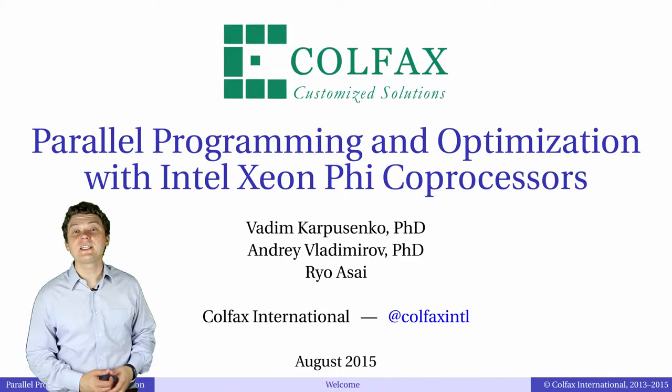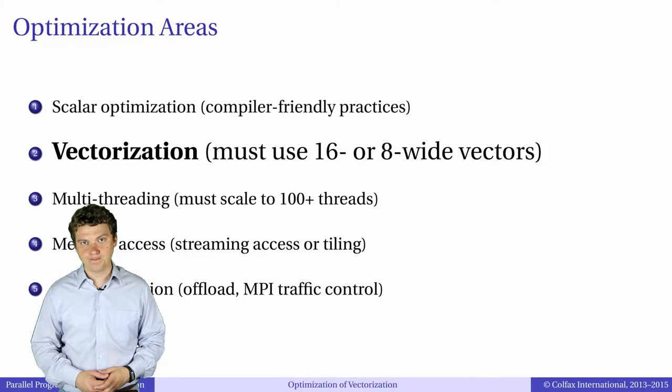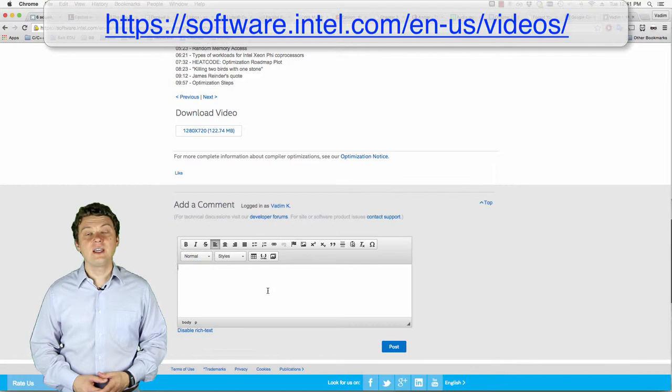Welcome to episode 5.3 of our video course Parallel Programming and Optimization with Intel Xeon Phi Coprocessors. In this episode, called optimization of vectorization data structures, we're starting to discuss the optimization of vector arithmetics in applications for Intel Xeon processors and Intel Xeon Phi Coprocessors. This discussion consists of four episodes, each of which talks about different aspects of vectorization.